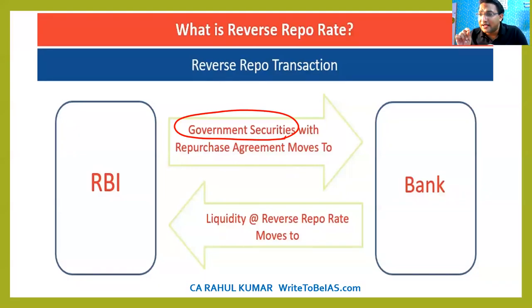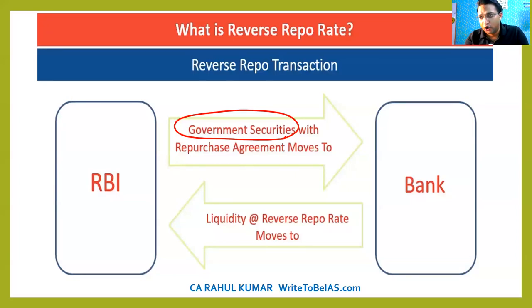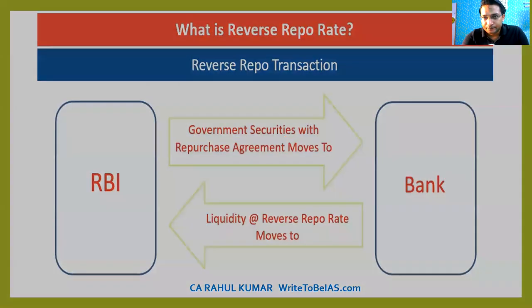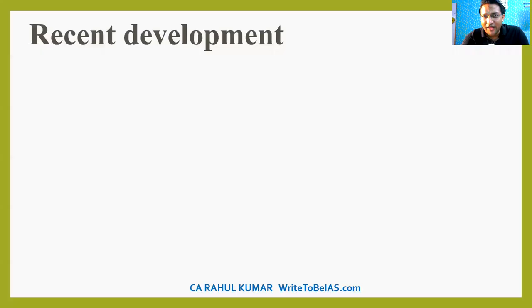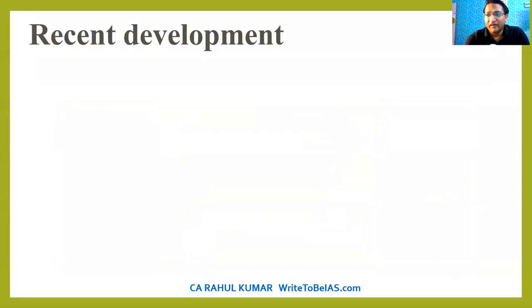This difference is called the policy corridor. Now, what is the recent development in the reverse repo rate?